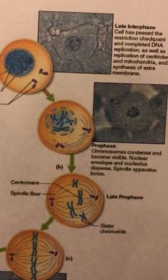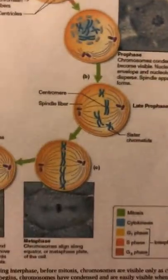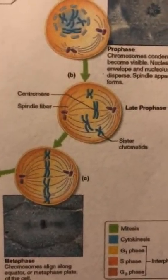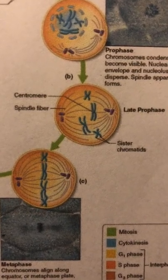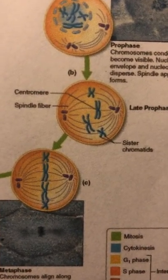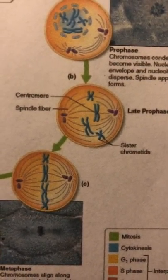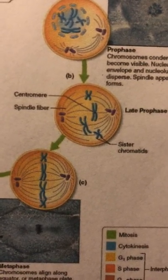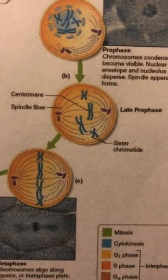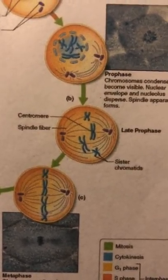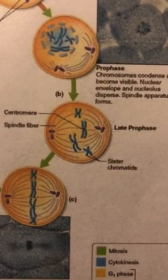After prophase, metaphase begins. During metaphase, spindle fibers attach to the centromeres of the sister chromatids, and the chromosomes line up in the middle of the cell.